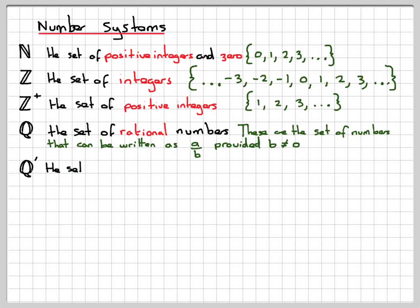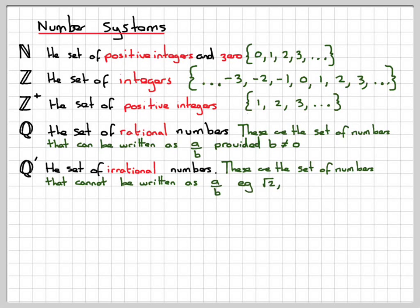The ones which are not rational numbers is a set of irrational numbers, and these are the set of numbers that cannot be written as A divided by B. Good examples of this are the square root of 2, pi, and the number e are all irrational numbers. These cannot be written as a fraction.